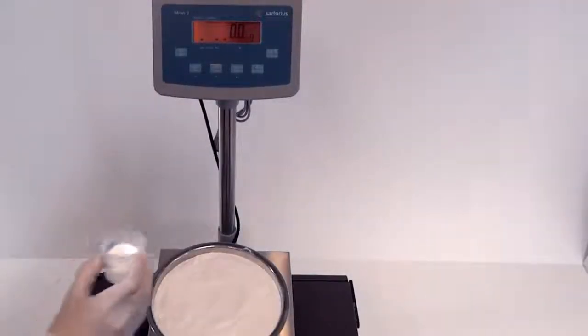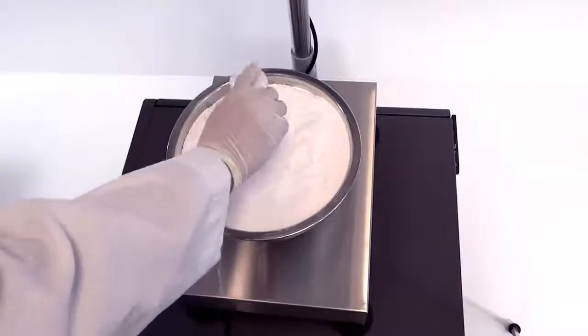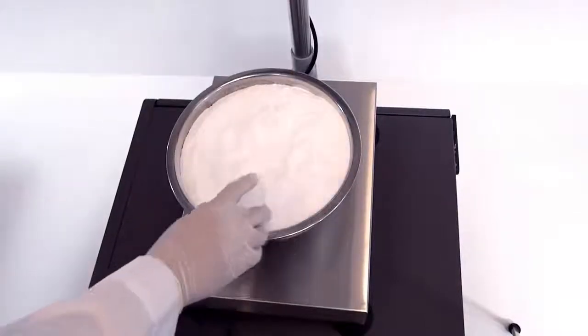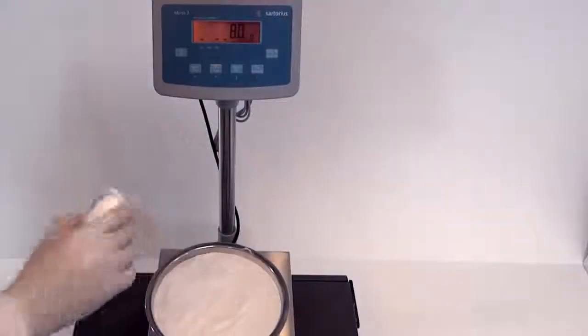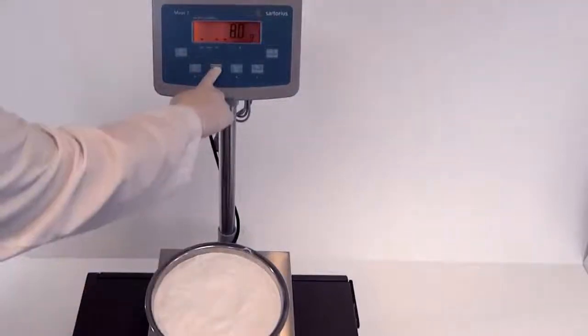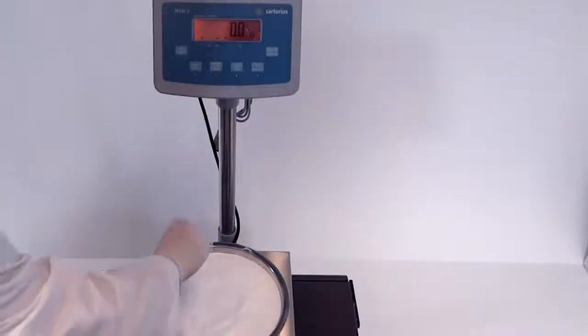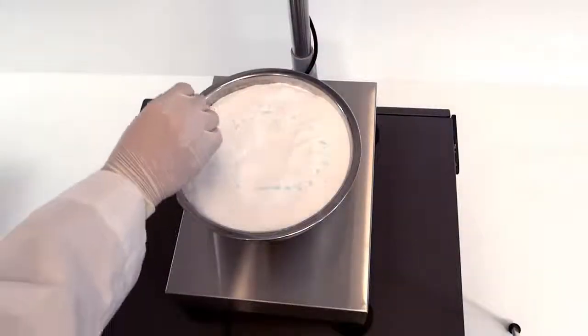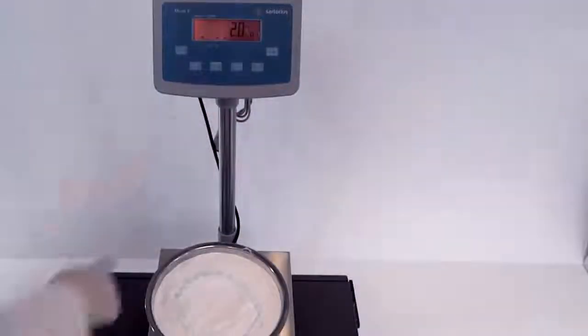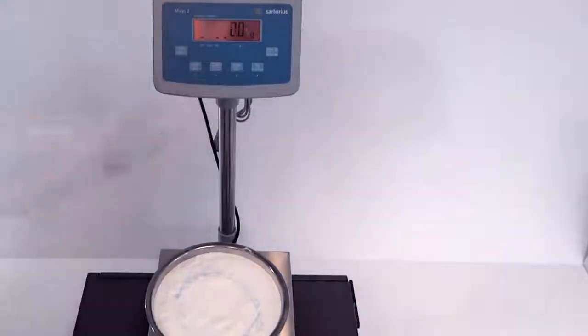The Mirus II is ideal for weighing multiple ingredients for formulation purposes. You can deduct and store the weight by pressing the tare button multiple times, up to the scale's capacity, and toggle between gross and net weight.